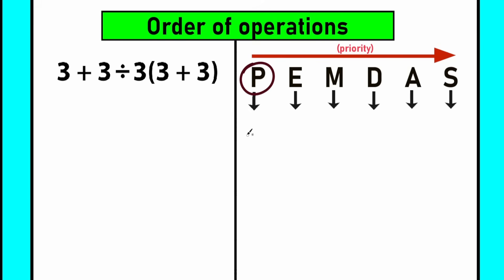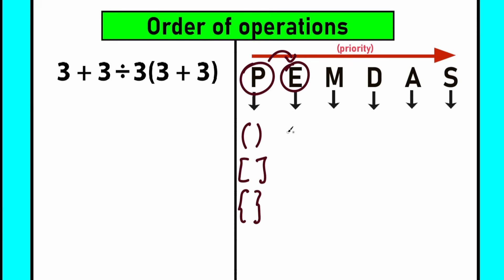Letter P stands for parentheses — these types of brackets, or sometimes squiggly brackets, depending on what country you live in. These are grouping symbols. After parentheses, we go to the next step: E stands for exponents. After evaluating expressions inside parentheses, we find all the powers — like 2 to the power 5 or 3 to the power 10 — and evaluate those before moving on. The next step is M and D — multiplication and division — which form one common group.